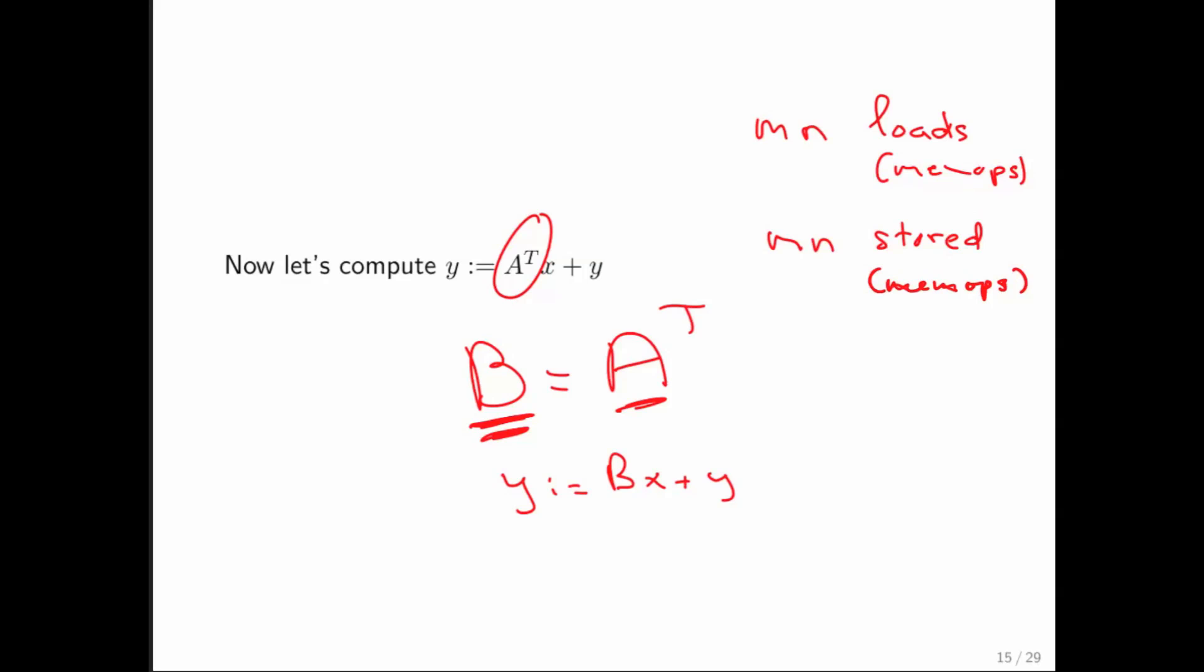Performing a matrix vector multiplication, we saw, is only 2 times m times n floating point operations. And a little bit later in the course, we're going to discuss the fact that memory operations are much, much slower than floating point operations. So you're going to end up spending all of your time transposing matrix A and very little of your time actually computing.